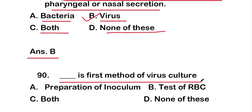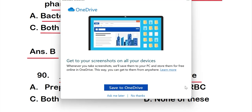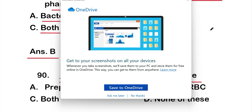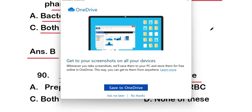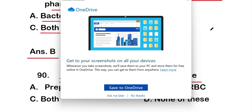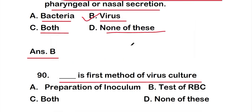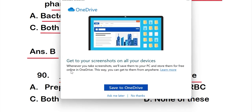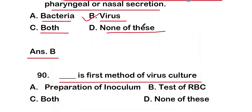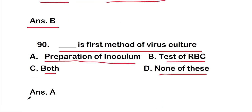Question number 90: blank is the first method of virus culture. Options are: option A, preparation of inoculum; option B, test of RBC; option C, both; option D, none. The right answer is option A — preparation of inoculum.